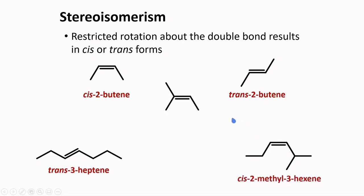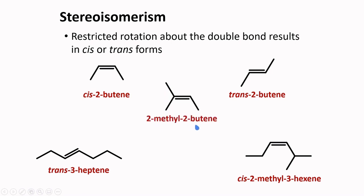There are also alkenes where you cannot designate cis or trans. For example, a compound with two methyl groups located on the same or opposite sides of the double bond — we simply call this 2-methyl-2-hexene. The methyl group is at carbon 2 and the double bond is at carbon 2 and carbon 3; we use the lower number.